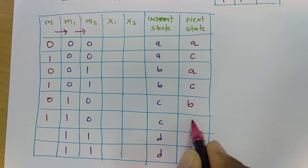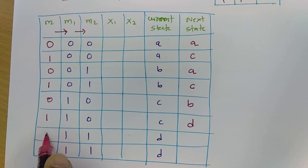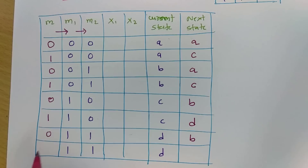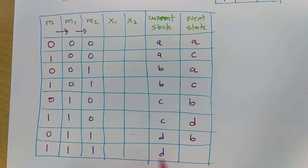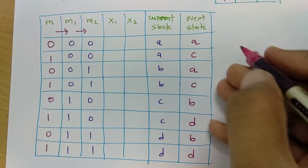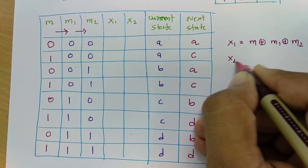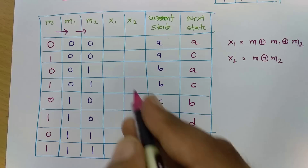If current state is 11 (state D) and input is 0, the next state will be 01, meaning state B. If current state is 11 (state D) and current input is 1, the next state will be 11, which is state D. Now, our outputs x1 and x2: x1 is modulo-2 sum of m, m1, and m2, and x2 is modulo-2 sum of m and m2 for this particular example. Based on this we can calculate x1 and x2.